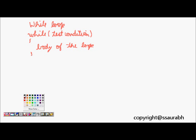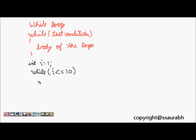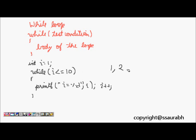Let's have one example. Say we want to print numbers from 1 to 10. We say int i = 1, then while i is less than or equal to 10, printf i = %d, then i++. First time i is 1, which is less than or equal to 10, so it prints 1, then i becomes 2, and so on. When i becomes 10 it prints 10, then i becomes 11. Since 11 is not less than or equal to 10, it exits. This is the while loop.